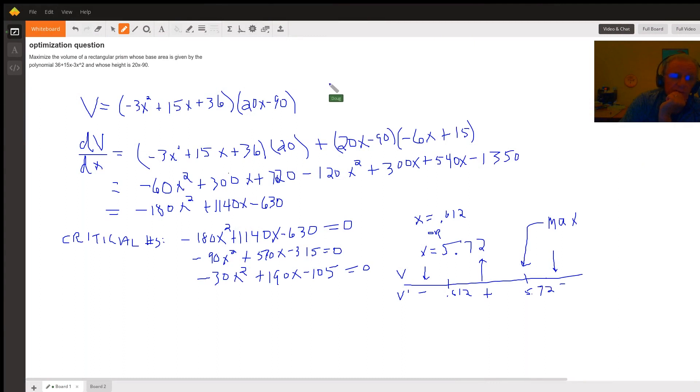The general strategy for this problem is to realize that the volume of the rectangular prism will be given by the area of the base times its height. So there's a formula for the volume of this rectangular prism.